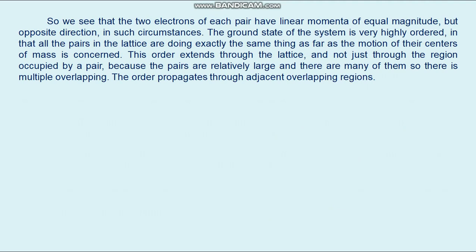When an external electric field is applied, the pairs — which behave like particles with two electron charges — move through the lattice under the influence of the field, while continuing to maintain the order so as to keep their number at a maximum. They carry current by moving through the lattice with all of their centers of mass having exactly the same momentum. The motion of each pair is locked into the motion of all the rest, so none of them can be involved in the random scatterings from lattice imperfections that cause low-temperature electrical resistance.